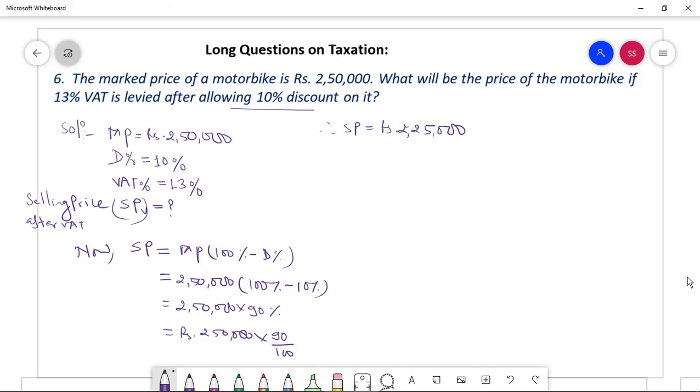After 10 percent discount, but we have to find the selling price including 13 percent VAT. So again, dear students, SPB I have defined what is SPB here. SPB equal to SP times (100 percent plus VAT percent) because VAT will be added in selling price to make selling price of VAT.